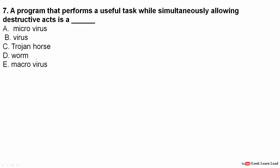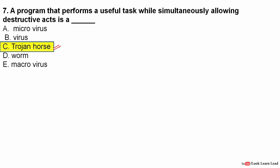Next question: a program that performs a useful task while simultaneously allowing destructive acts is known as what? The answer is a Trojan horse. What a Trojan horse does is disguise itself as a useful file — like a video player, audio player, or PDF converter — but it is actually a destructive program that causes harm to your computer.